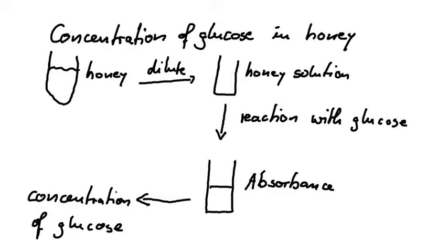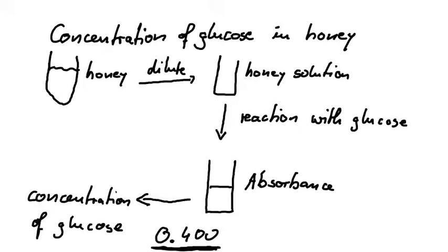What we would get is simply a number — let's say this reaction gives an absorbance of 0.400. But what does this absorbance actually mean? What we can do is use known concentrations of glucose and measure the absorbance of these known concentrations in the same reaction, then compare our measured absorbance of the honey with the known concentrations.